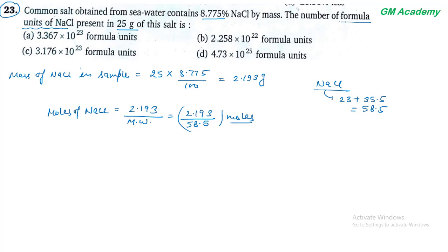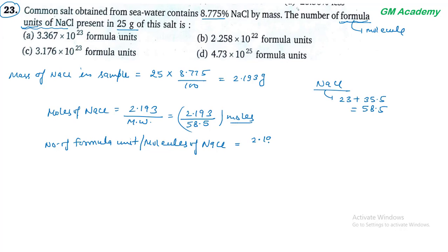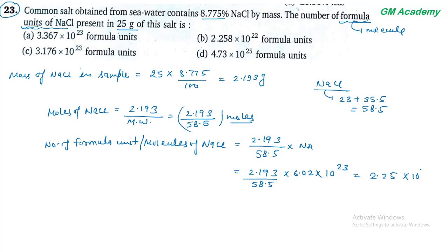Formula units ionic compounds के लिए यूज करते हैं। Number of formula units = (2.193 / 58.5) × 6.02 × 10²³ = 2.25 × 10²². यह option B से match कर रहा है। Option B correct answer हो जाएगा।